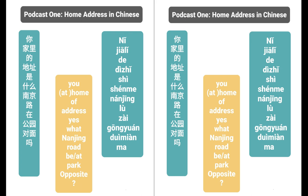And 对面 means 'facing,' 'the opposite,' 'across from' — as we translate it. If you're standing on this side of the road and ask where a place is, someone might say 在对面 — it's on the opposite side. And Ken and I, when we record the shows, we actually said 面对面 — face to face.